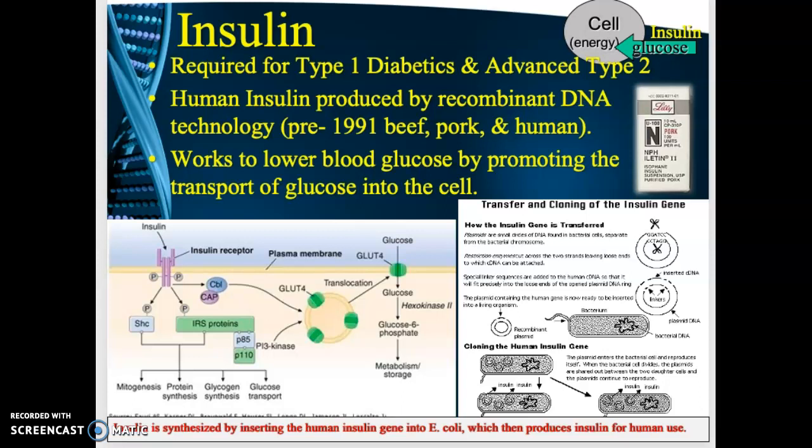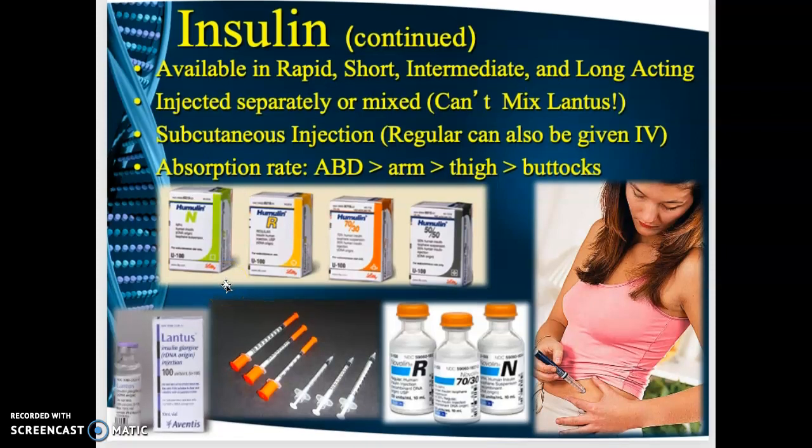After 1991, recombinant DNA technology was introduced: the human gene for insulin production is inserted into E. coli bacteria. The bacteria reproduce, producing large quantities of insulin. The E. coli are then lysed and insulin is extracted via centrifuge. This is how most insulin is produced today. Insulin works to lower blood glucose levels by promoting the transport of glucose into the cell.